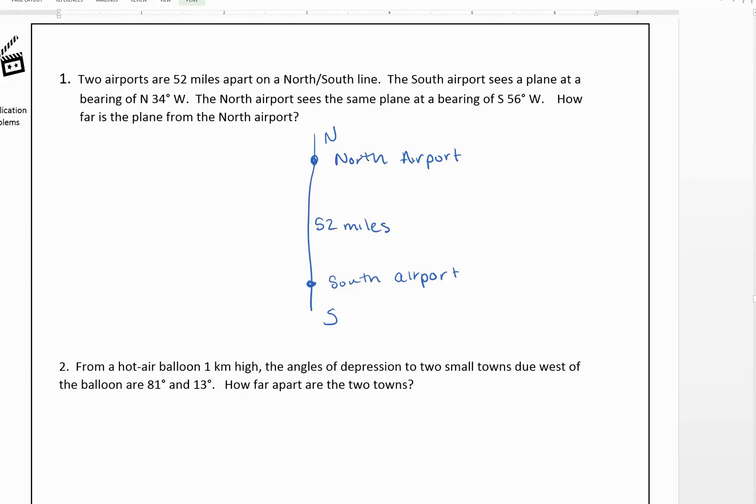Now, we're told that the south airport sees a plane at a bearing of north, so we'd think of starting north and rotating 34 degrees west. Okay, so we see a plane there.